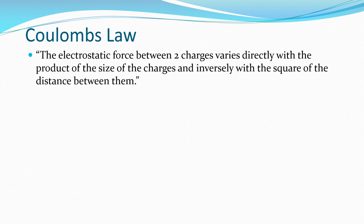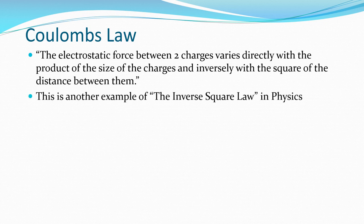This is very similar to the gravitational law, where the gravitational force between two masses varies directly with the product of the size of the masses and inversely with the square of the distance between them. Indeed, this is another example of the inverse square law within physics, and is defined by this equation: F is equal to K multiplied by the product of the two charges divided by the radius — the distance between them — squared.